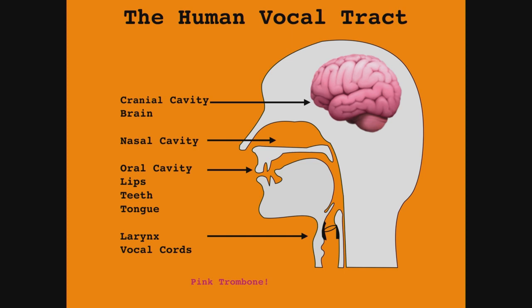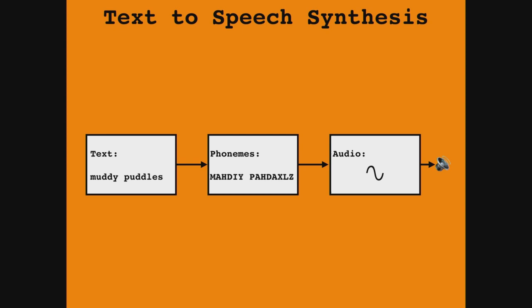Here is a very simplified flow of how text is usually converted to speech. There are two main steps. We have a text representation — like 'muddy puddles' — and from that we go to a phoneme representation, because the relation from text to phonemes is not very orthogonal. The letters do not map directly to the sounds. So first we do text-to-phoneme conversion, and from the phonemes we go to the audio stage, with different methods for doing this.